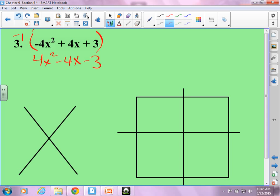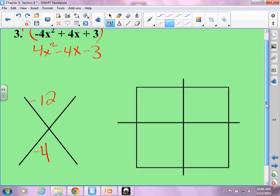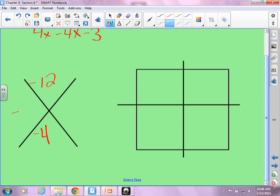So now, what do I get in the top part of my x? Negative 12, because 4 times negative 3 gives me negative 12. Down below is negative 4. What two numbers? Negative 6 and 2. Negative 6 times 2 gives me negative 12. Negative 6 plus 2 gives me negative 4. That works.